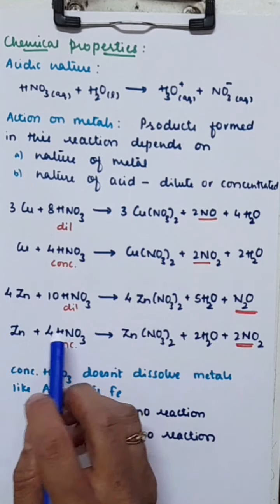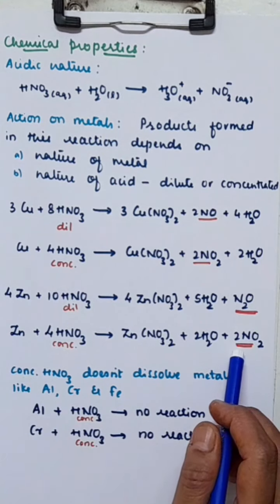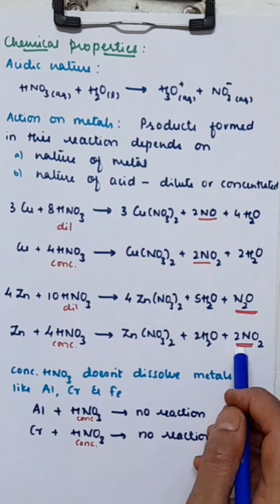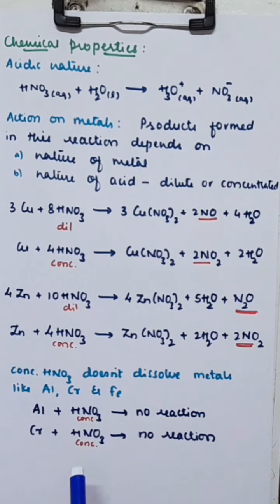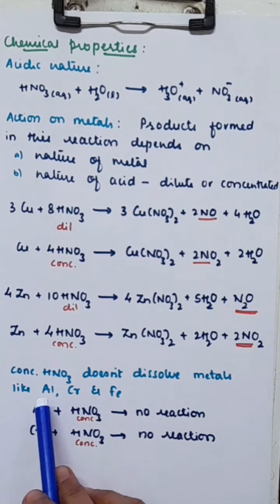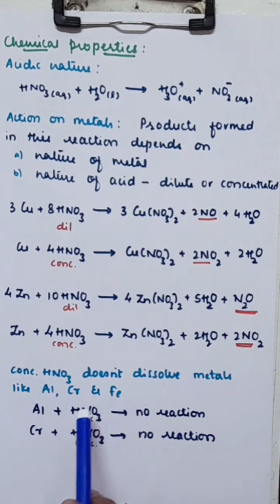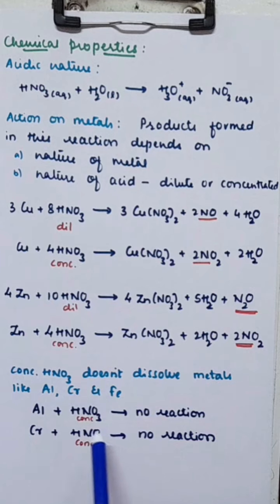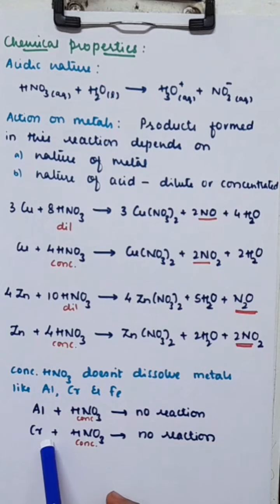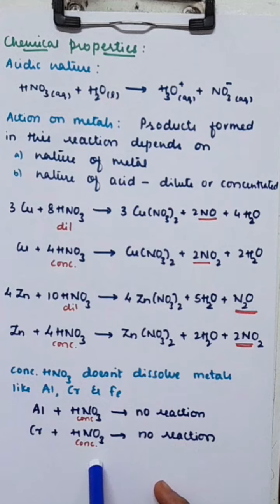Now let's see the action on metals like aluminum, chromium, and iron. There is no reaction between concentrated nitric acid and these metals because a stable layer of their oxide — aluminum oxide or chromic oxide — is formed on the surface, which prevents further action of the acid.